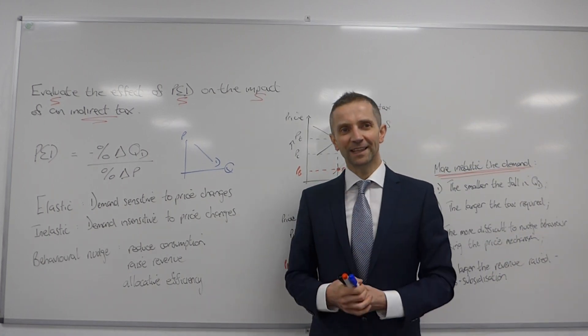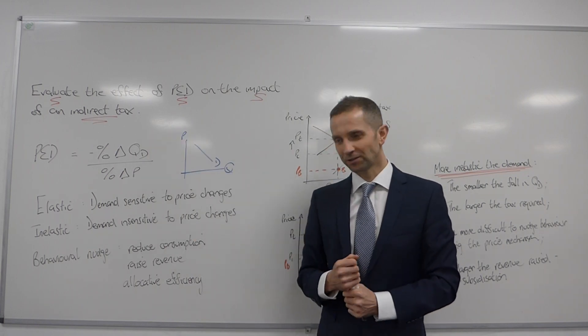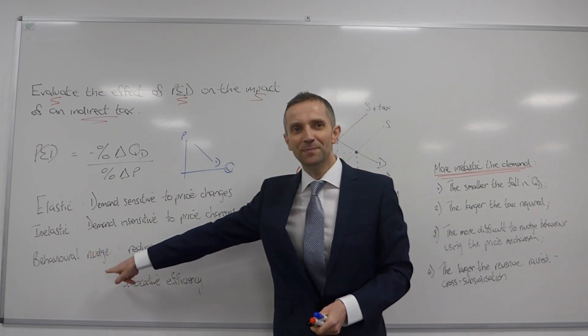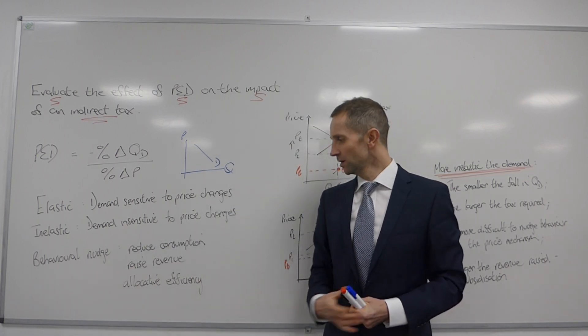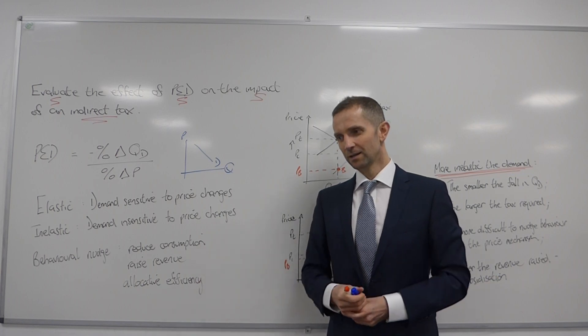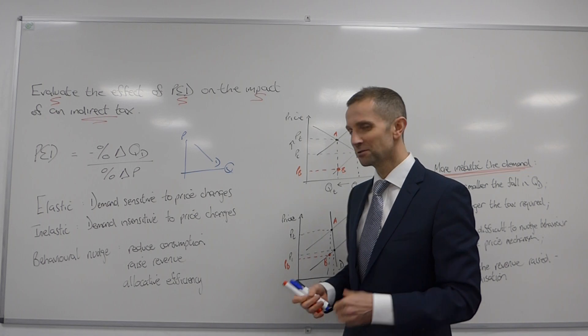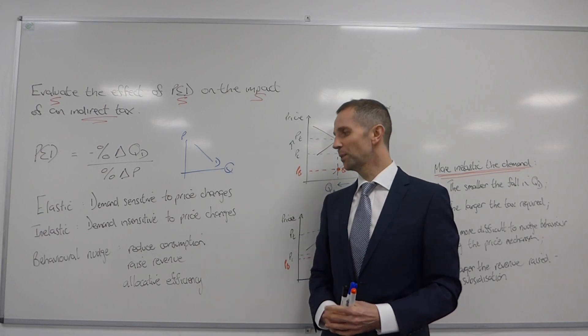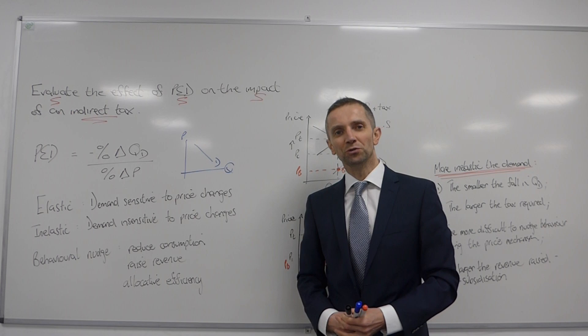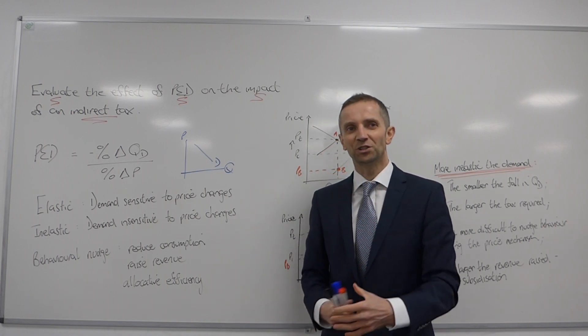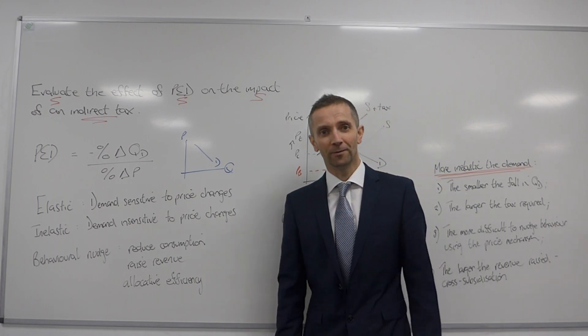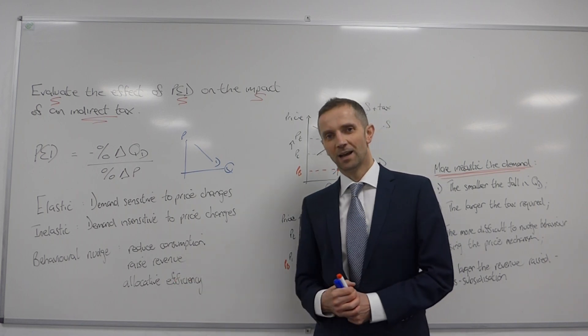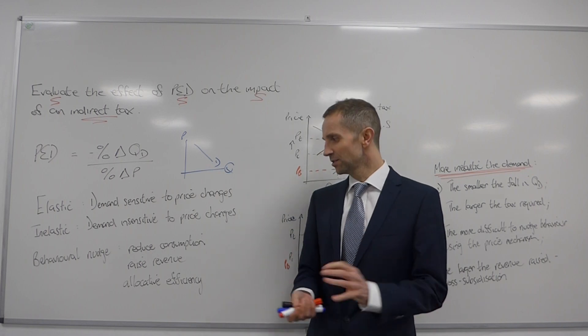Now why might it be the case that the government might introduce an indirect tax? Well let's use this old familiar phrase, familiar friend once again, the behavioural nudge. So it might be to reduce consumption of a certain good. I being a bit of an athlete myself in my spare time, I don't like too many sugary drinks and that sort of thing. But it might be the case that the government decides it's appropriate to put a tax on sugary drinks to reduce your consumption, to improve your dental hygiene, all of those types of things. Or it might be more simple than that. It might be the case that the government is simply seeking to raise more revenue.